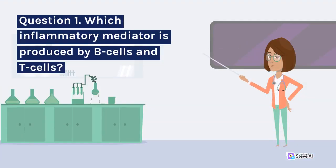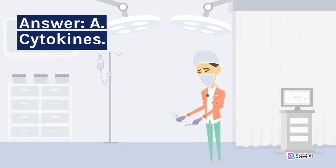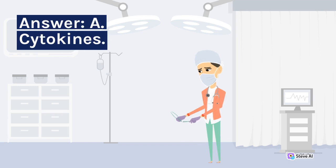Question 1. Which inflammatory mediator is produced by B-cells and T-cells? A. Cytokines. B. Immunoglobulins. C. Interleukin-4. D. Interleukin-6. Answer: A. Cytokines.